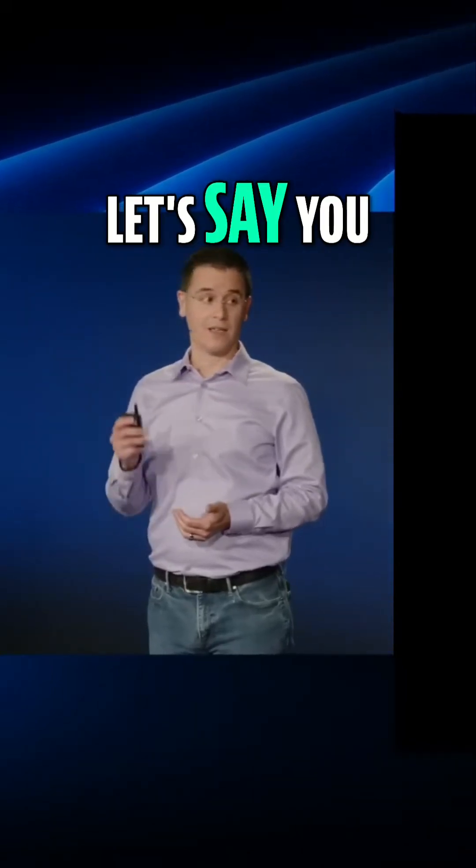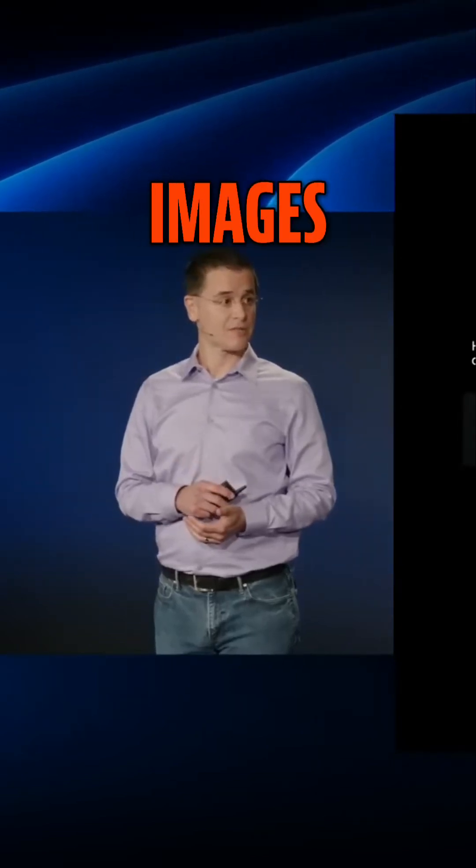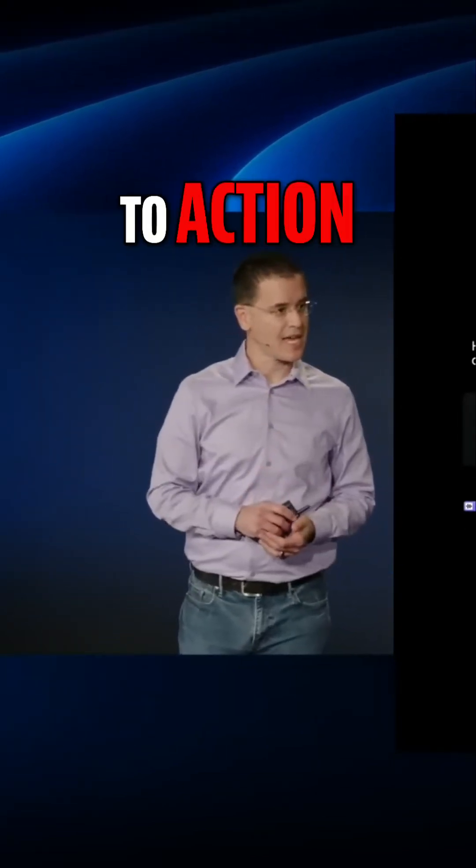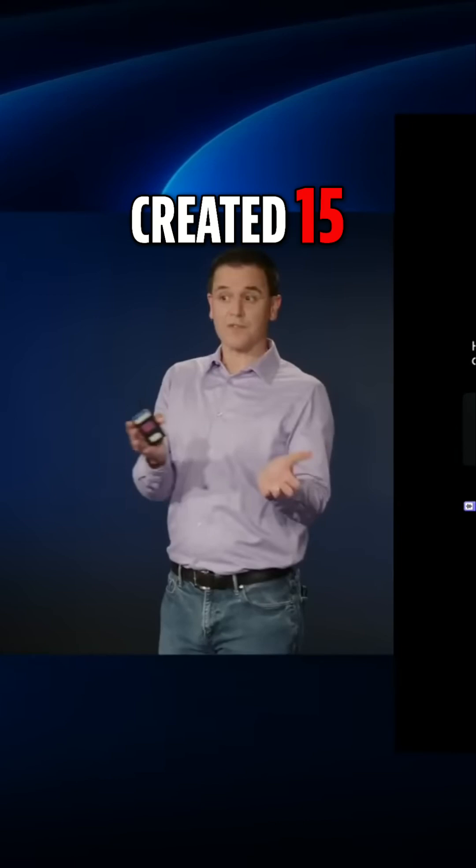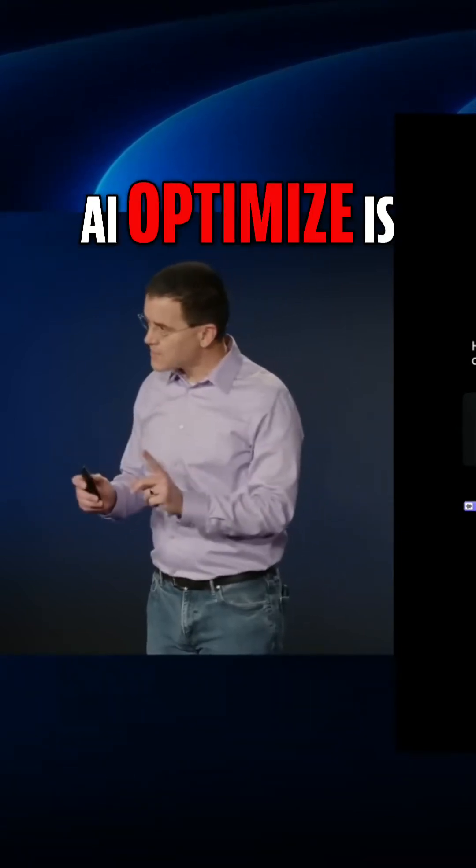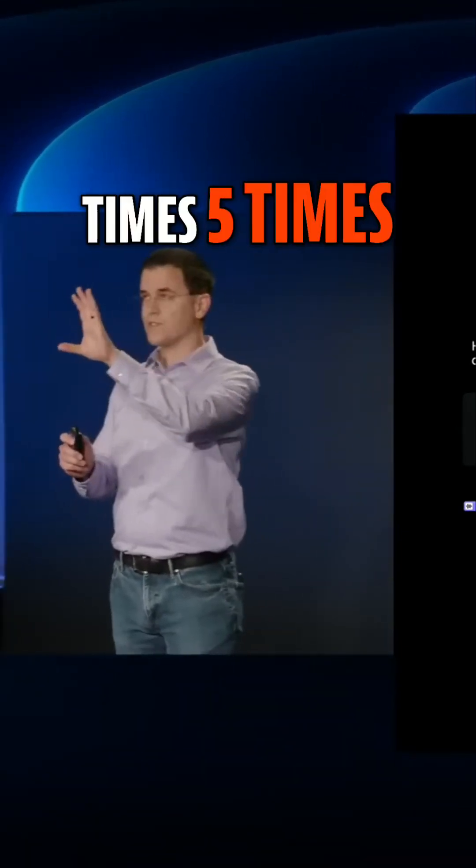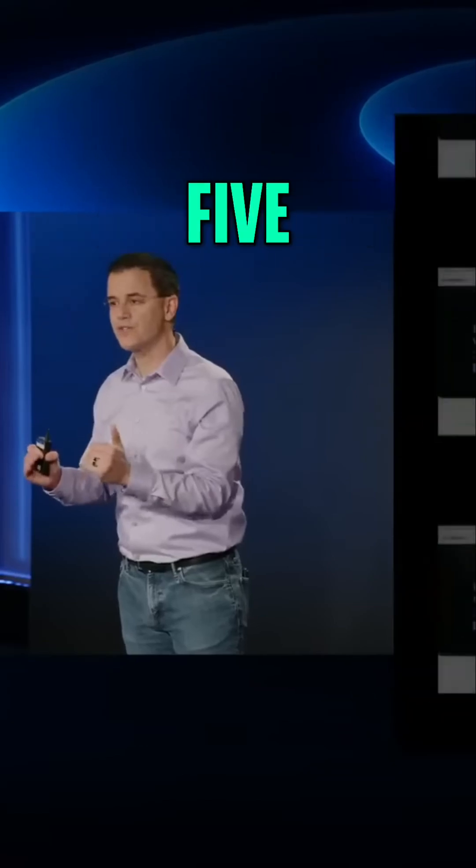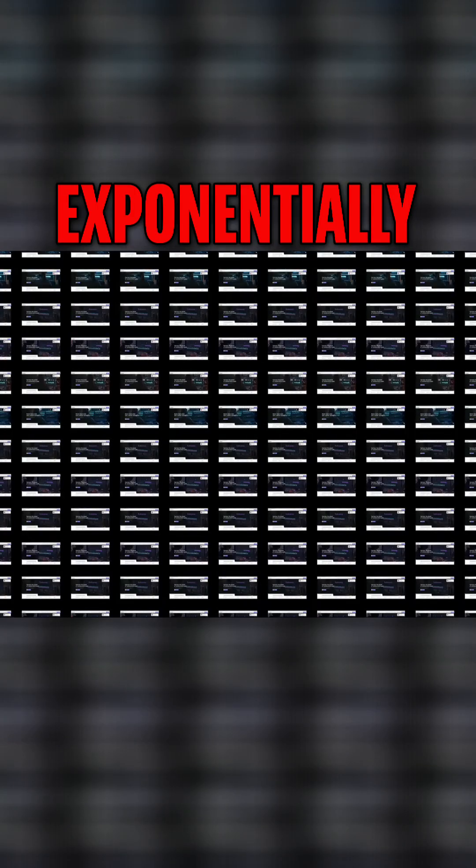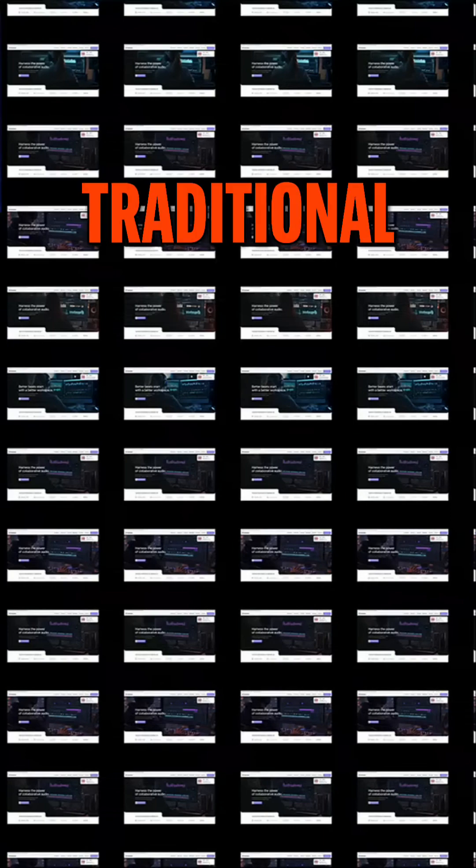Let's say you wanted to try five headlines, and five different images, and five different calls to action. You've created 15 different things. AI Optimize is going to try all five times five times five, all 125 different possible combinations, and do so exponentially faster than you could if you were doing traditional multivariate testing.